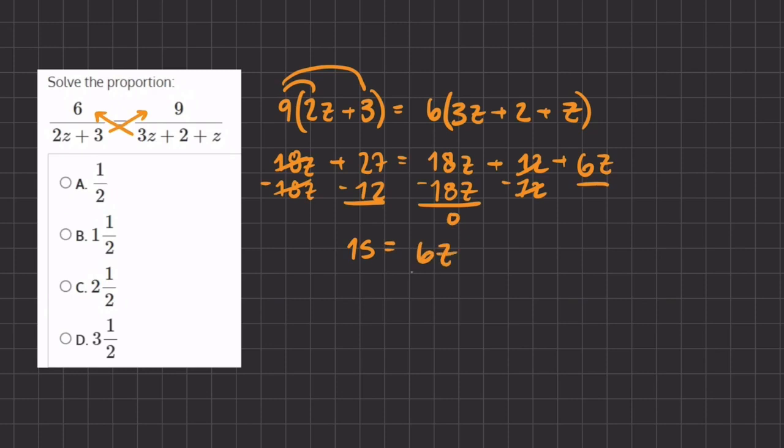And now in order to isolate the z, we're going to divide by 6, and now we have 15 over 6 equals z.